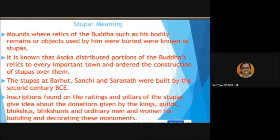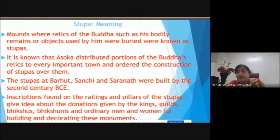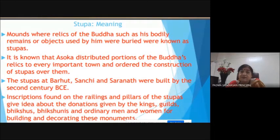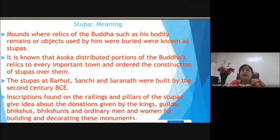A student asks whether idol worship in the caves gives the first evidence of Mahayana Buddhism occurring. The instructor confirms: it is Mahayana Buddhism emerging by this time. In the earlier caves there is no Buddha statue, but in the later ones the statue appears. These caves were made over a long period — from the Satvahana period right up to the Rashtrakuta times — and it is remarkable that they remained sheltered for so long; otherwise, they would have been destroyed by invaders.